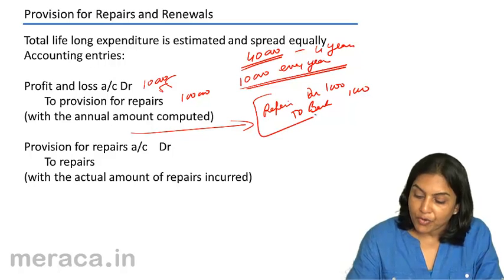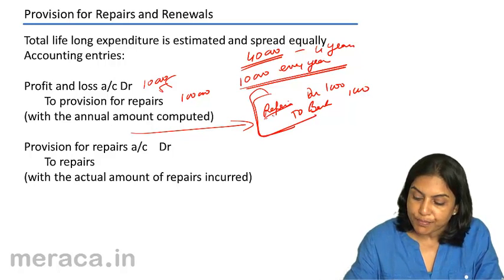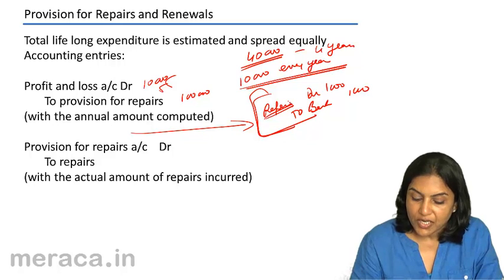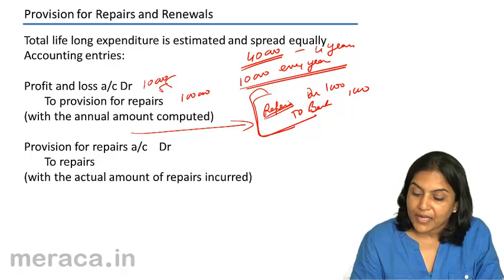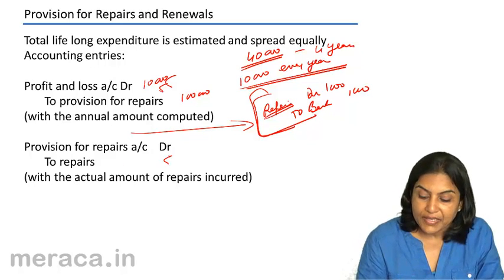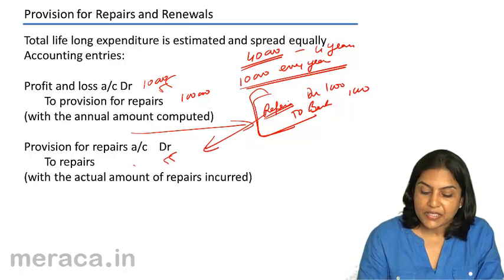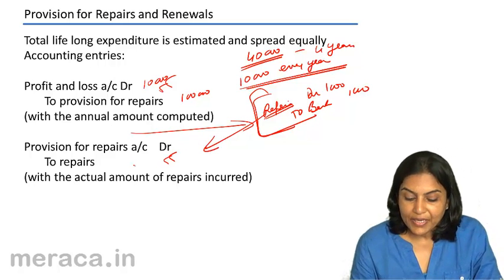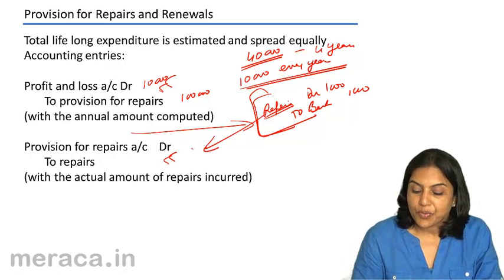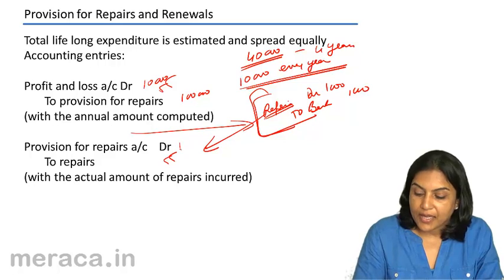This repairs expenditure is not taken to the profit and loss account, but it is taken to the repairs account. So provision for repairs account is debited, and to repairs we take an amount of 1,000.